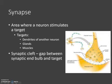If we look at the synaptic end bulb, we'll notice that there's a little space in between the synaptic end bulb of one neuron and the dendrite of another neuron, and this is called the synaptic cleft.